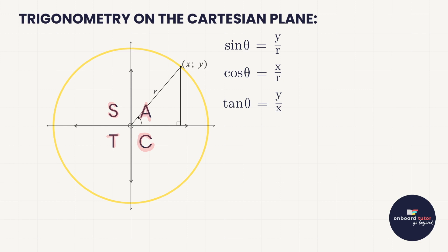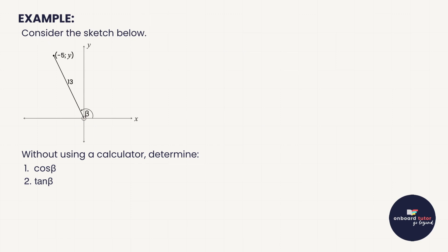We are now ready to combine that with the theorem of Pythagoras. Here's an example: consider the sketch below. They've given us an angle starting at the x-axis, a line segment 13 units long, and coordinates of minus five and unknown y. We need to determine cos beta and tan beta without using a calculator. Recognizing a sketch plus the instruction 'no calculator' are the two big clues that this is a Pythagoras type problem.